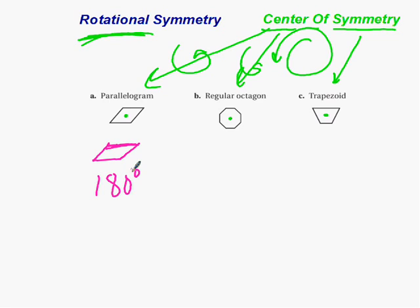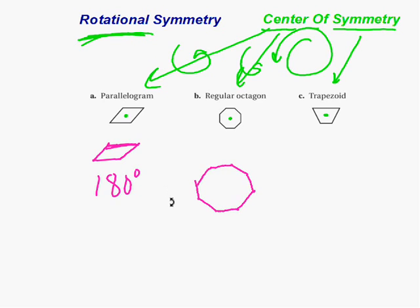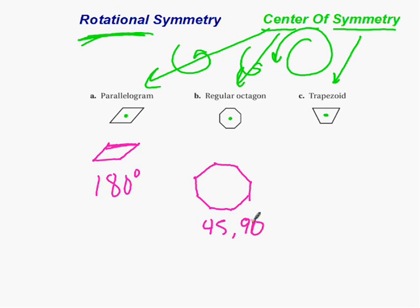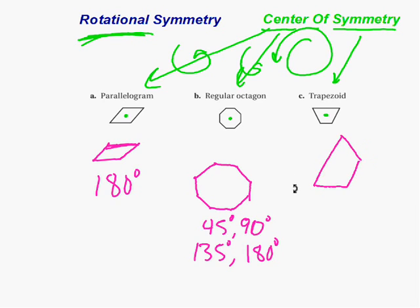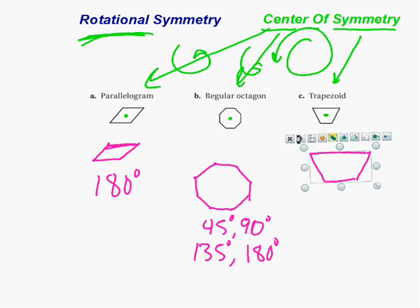Let's look at an octagon — eight sides. When is it going to look the same again? Turning it: at 45 degrees, 90 degrees, 135 degrees, and 180 degrees — so there are rotational symmetries at 45, 90, 135, and 180 degrees. Now a trapezoid: spinning it around — no rotational symmetry at 90, no rotational symmetry at 180, and none going back to 360 degrees. This trapezoid has no rotational symmetry.